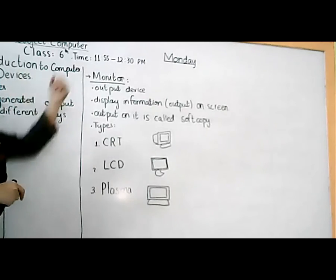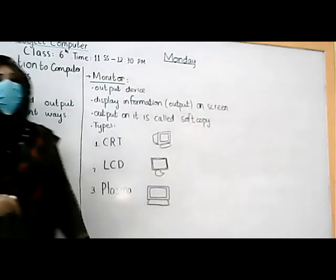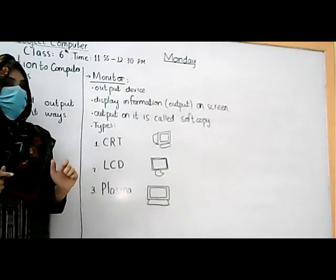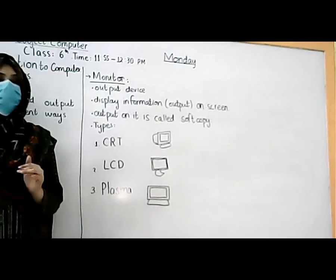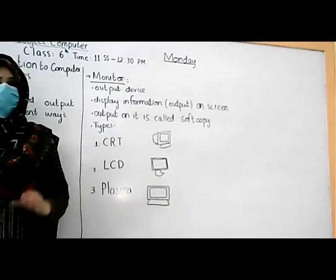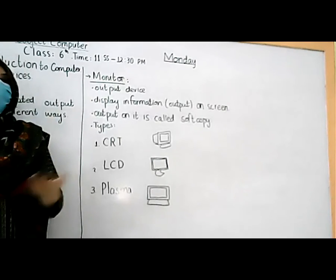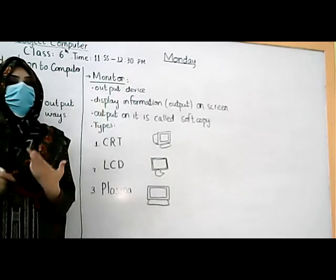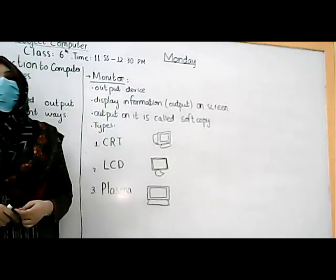The output which is displayed on the monitor is called the soft copy. A soft copy is virtually available information — you can only see and view it on the screen. So to repeat: a monitor is an output device available for displaying or showing the result, information, or output on the screen.